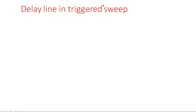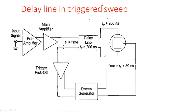We need to provide some delay in the vertical deflection system so that the peak value and the time period both reach the plate at the same time; otherwise there may be some loss of information. This is the block diagram of the delay line in trigger sweep. In the vertical deflection system, the blocks are: vertical pre-amplifier, followed by main amplifier, followed by delay line, and then vertical deflecting plates.